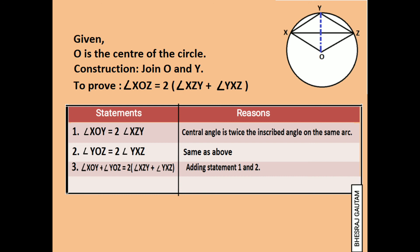Since in the figure angle XOY and angle YOZ together equal the complete angle XOZ, statement 4 can be written as angle XOZ is equal to double the sum of angle XZY and angle YXZ. Here we conclude the proof.